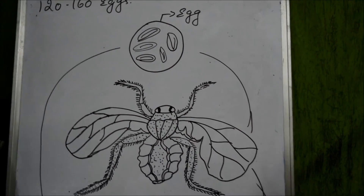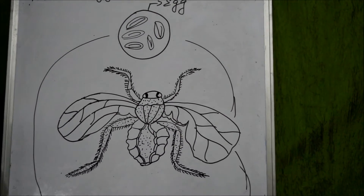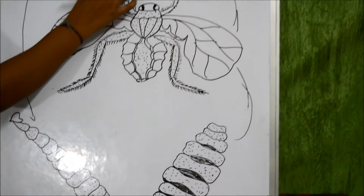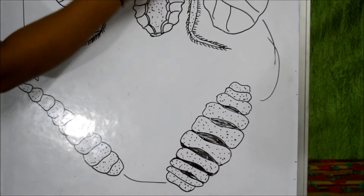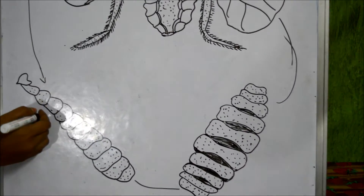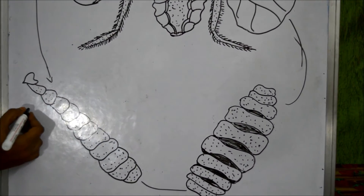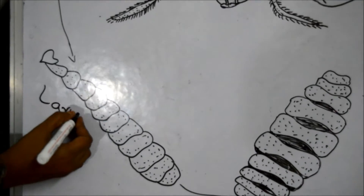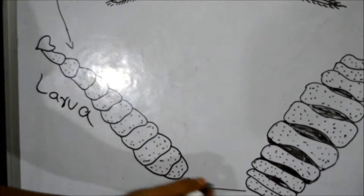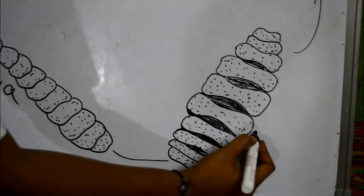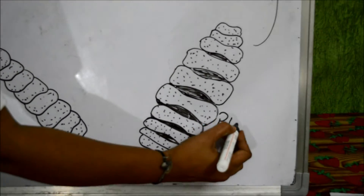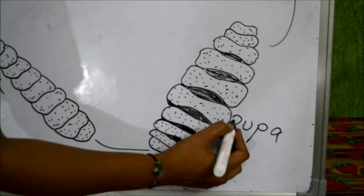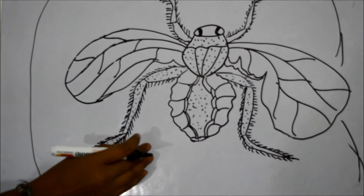The life history of the housefly consists of four stages: egg, larvae, pupa, and adult housefly.